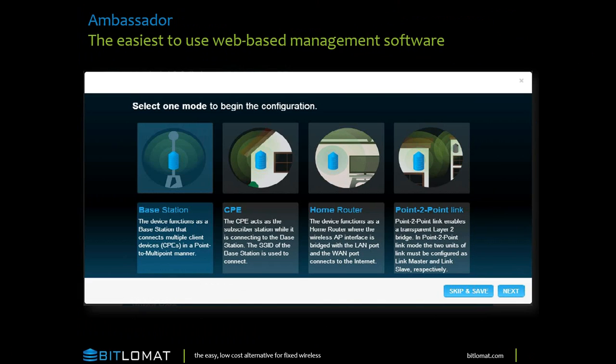Ambassador is our name for our web-based management software. You can operate in four different modes: base station, CPE, home router, or point-to-point link — and you'll see that on either platform. These are 5 GHz radios, by the way. We're working on 2.4, but that is not available today.